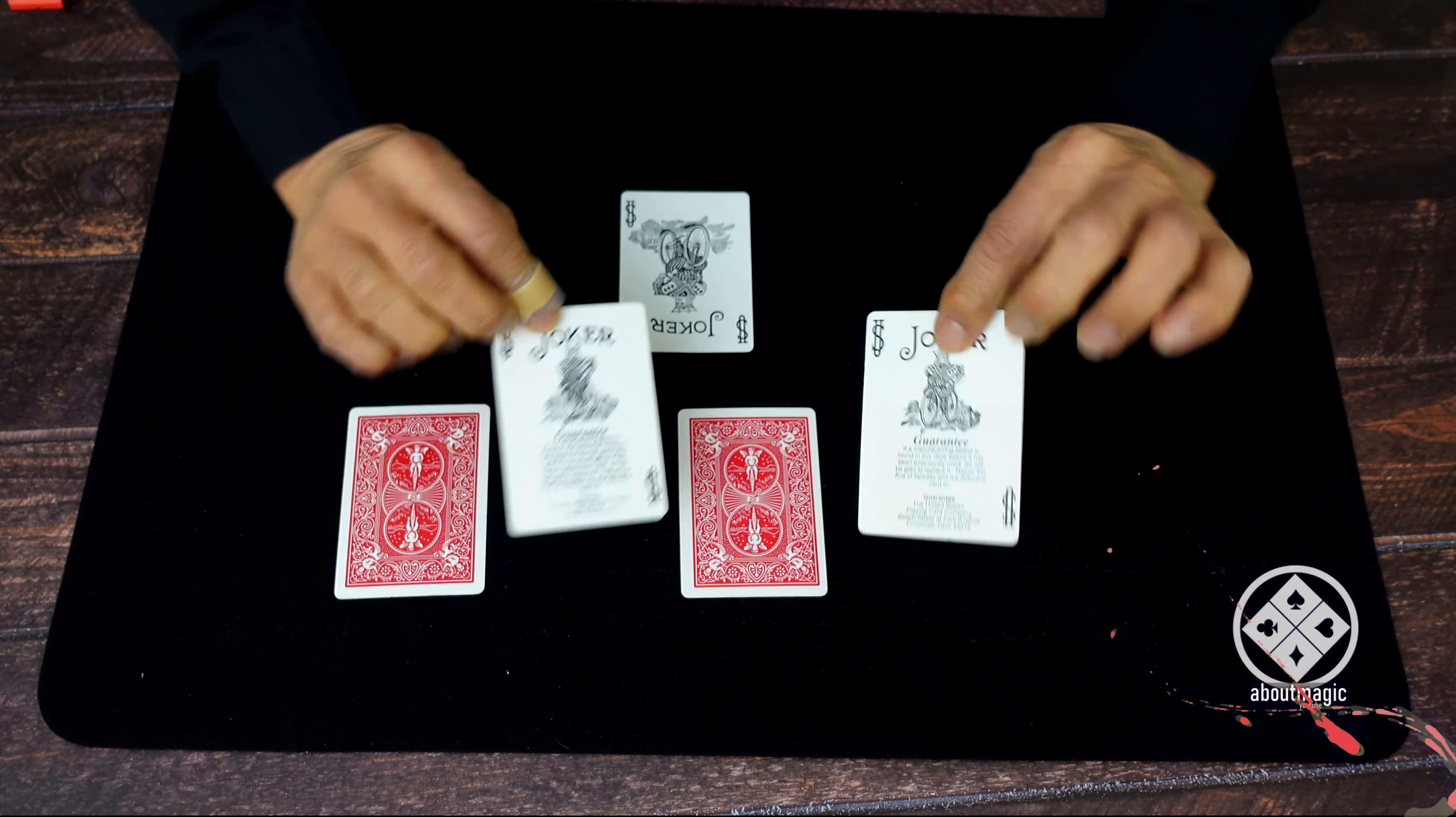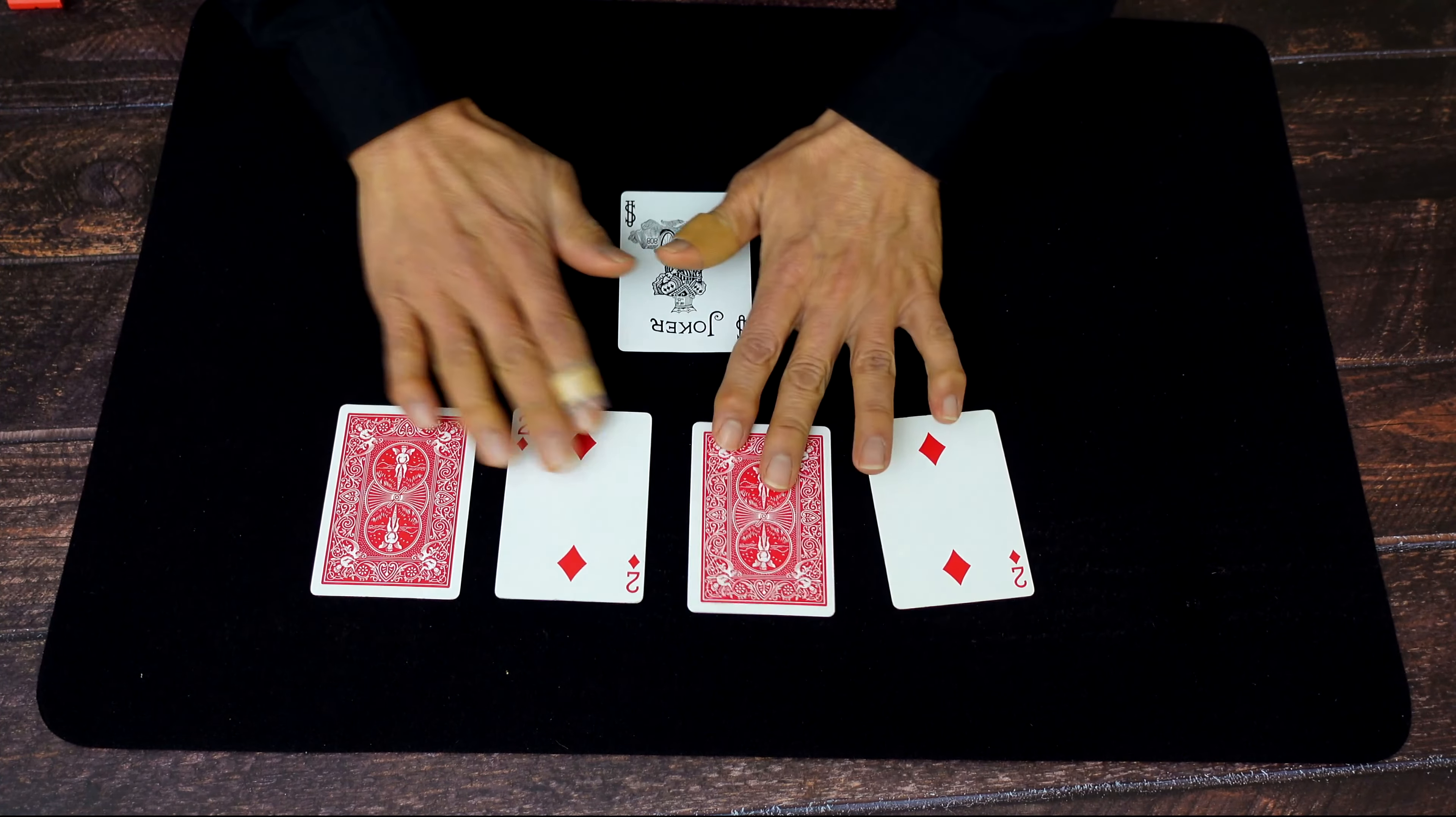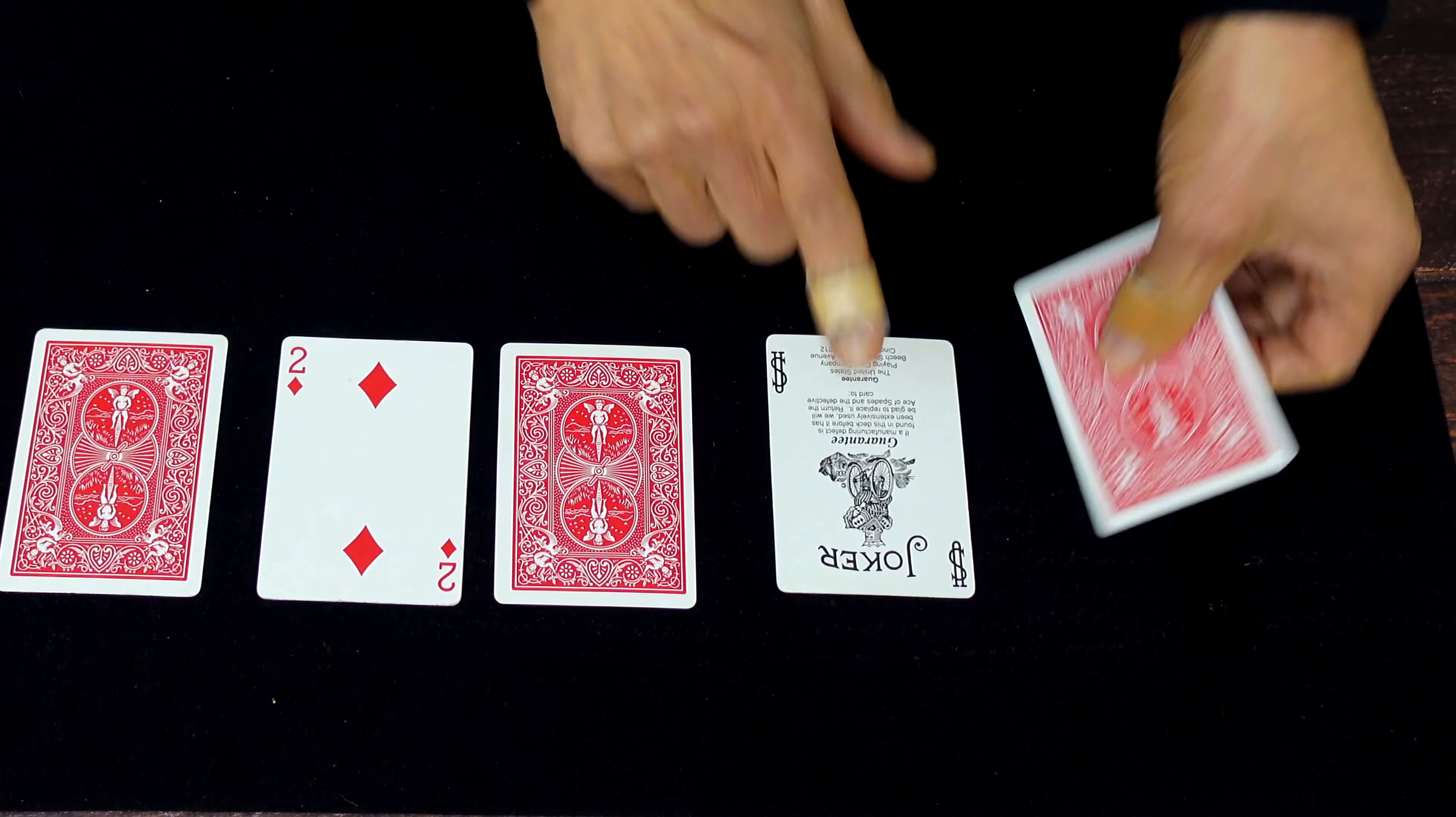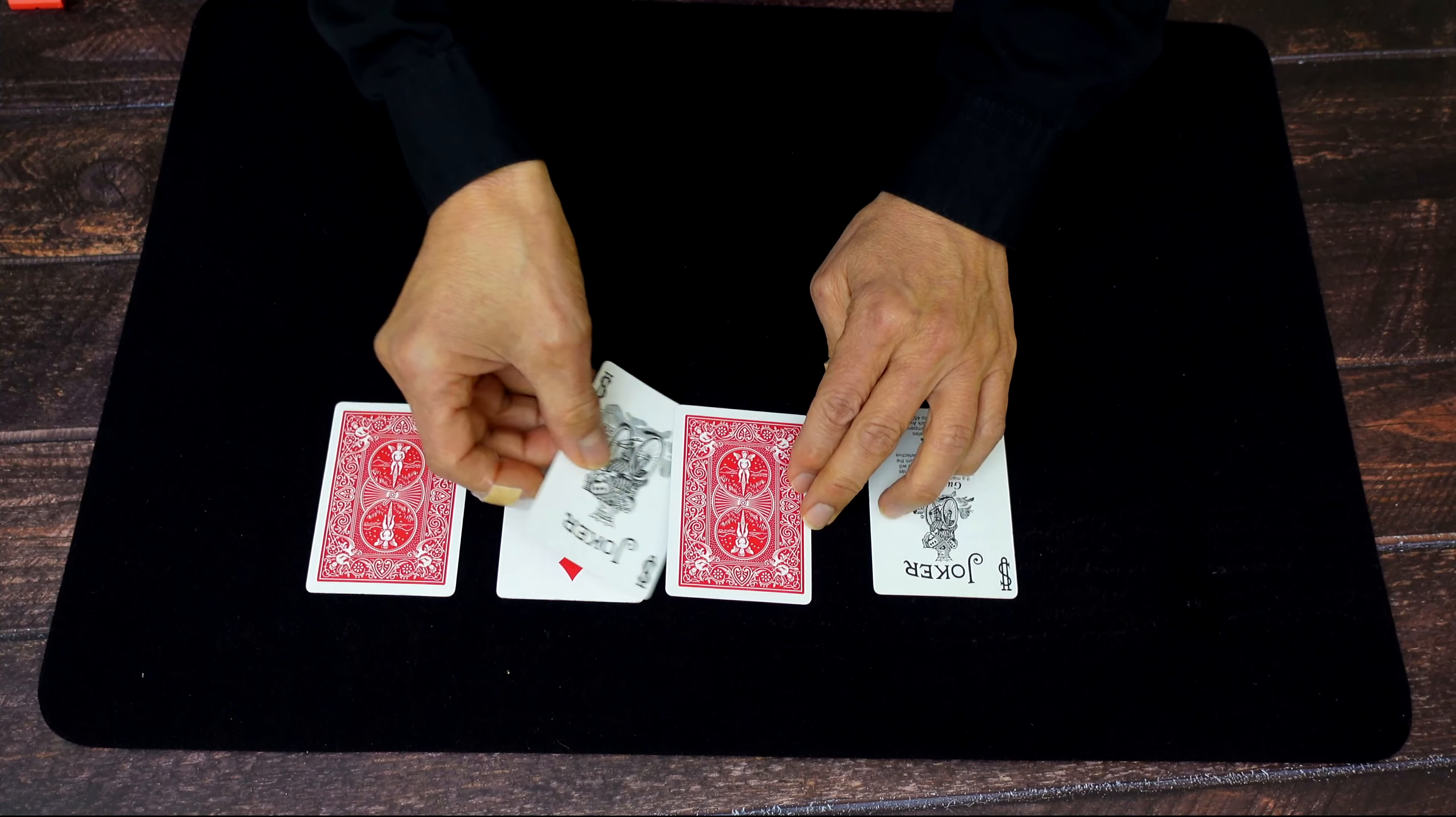Now see, these two cards are actually gimmicked and these are regular, but you use the same move throughout. What you do is you scoop this card under and turn both over. It looks like that card changed into a Joker, and then you show this one a Joker once again.